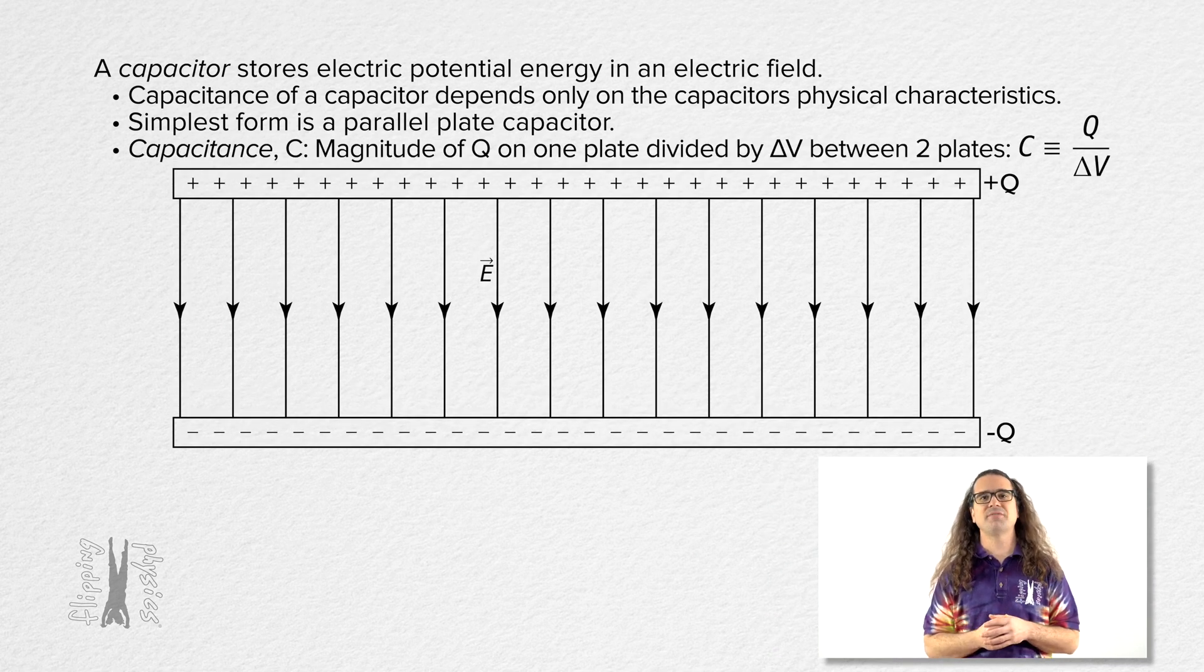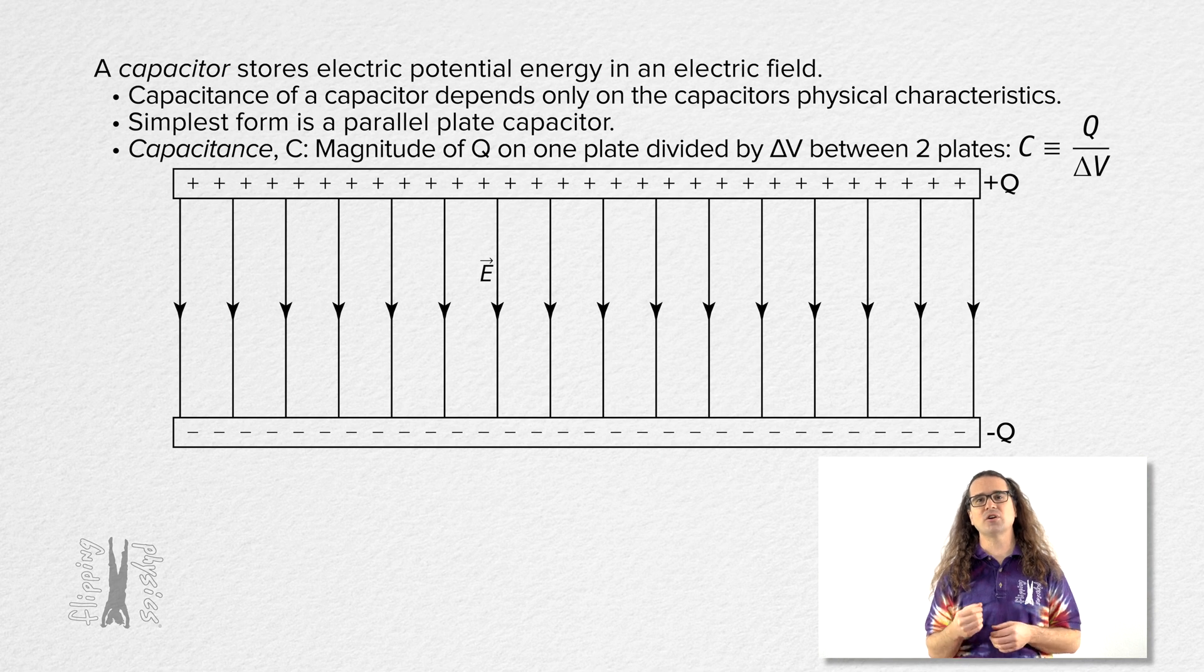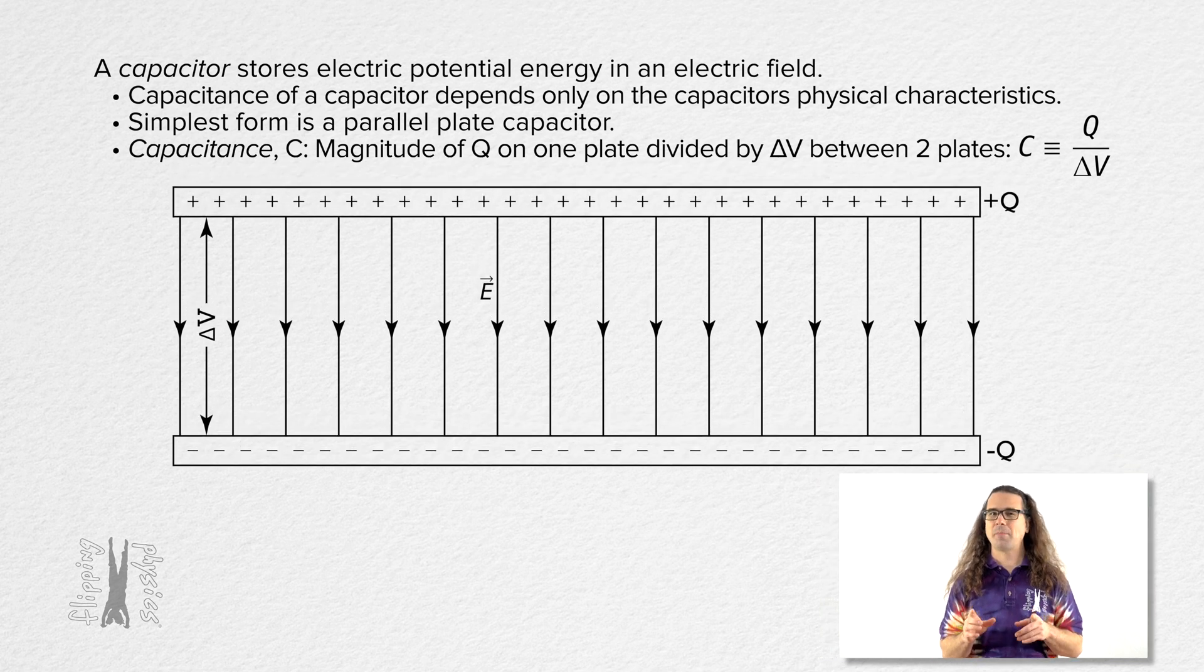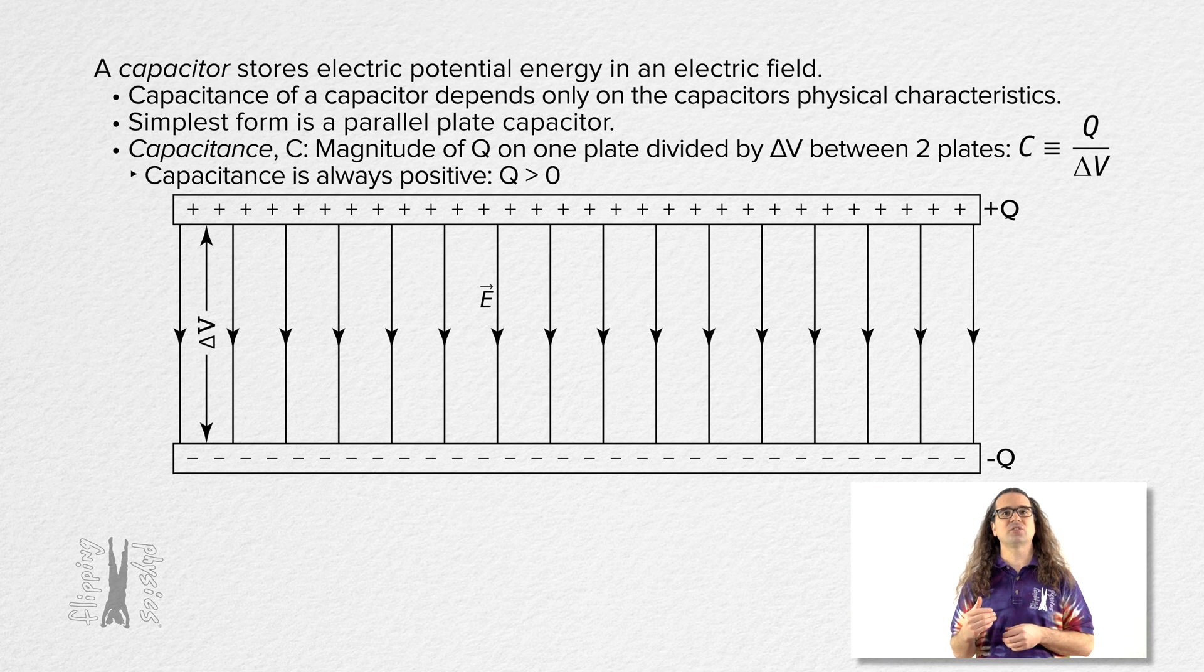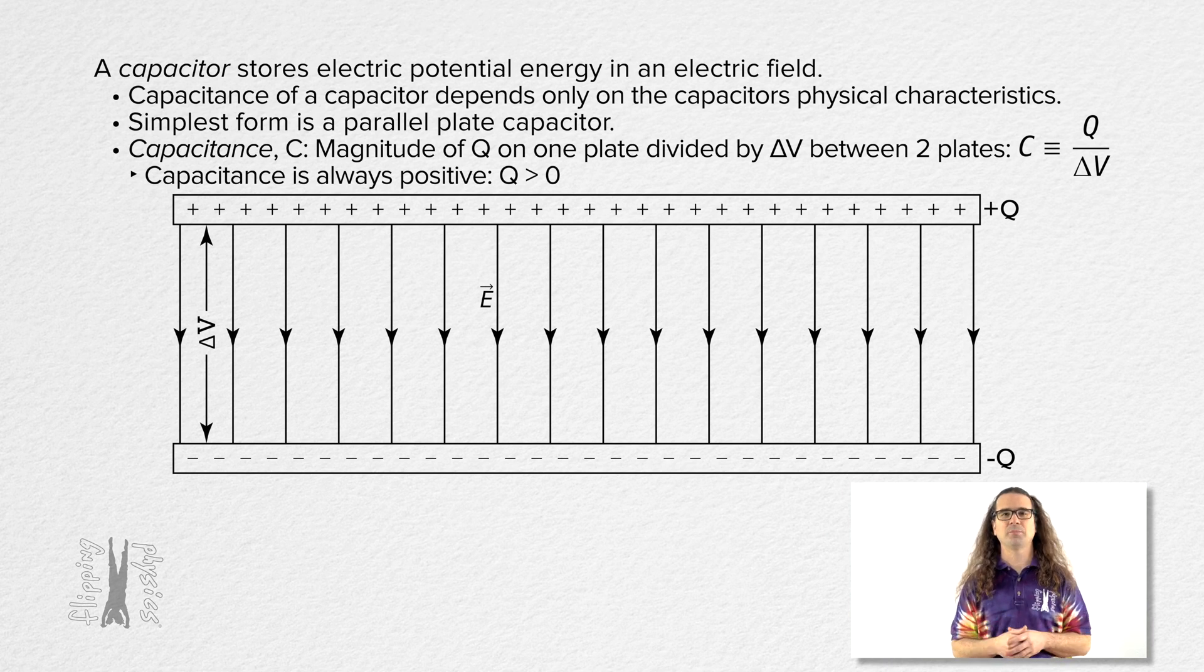Capacitance, capital C, is defined as the magnitude of the charge stored on one plate divided by the electric potential difference between the two plates. Capacitance is always positive, which means that capital Q is the charge on the positive plate, or the magnitude of the charge on the negative plate. And delta V is the positive electric potential difference between the two plates.